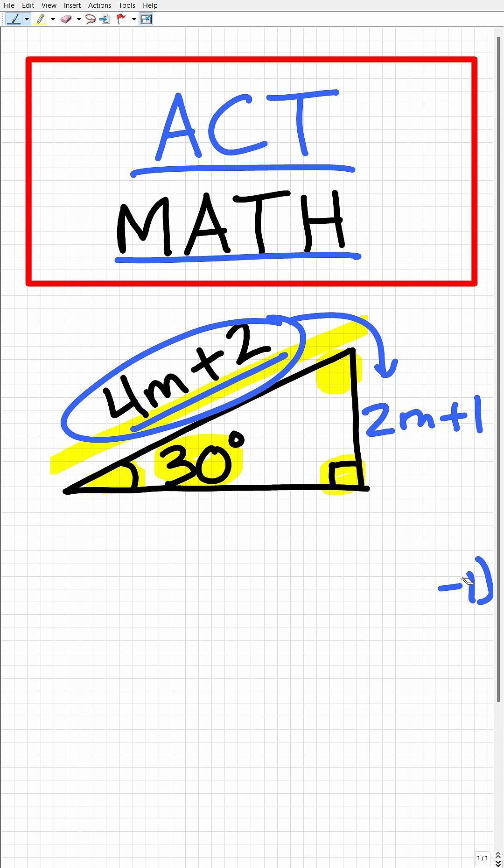Okay, so to get this last side, all we have to do is take the shorter side and multiply it by the square root of 3. So that's going to look like this. That'll be parentheses 2m plus 1 parentheses times the square root of 3.